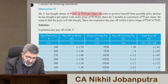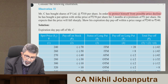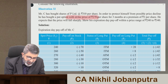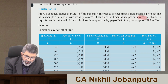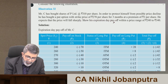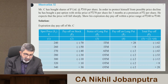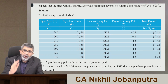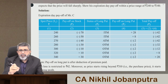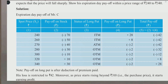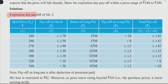Let us move on to Illustration 32. Mr. C has bought shares of P Limited at rupees 310 per share. In order to protect himself from possible price decline, he has bought a put option with a strike price of rupees 270 per share for three months, with a premium of rupees 2 per share. He expects that the price will fall sharply. Show his expiration day payoff with a price range of rupees 240 to rupees 340. The solution shows payoff at spot prices of 240, 260, 270, 280, 300, 320, and 340.